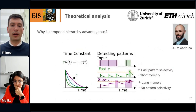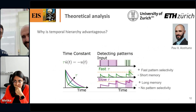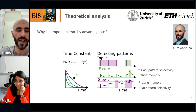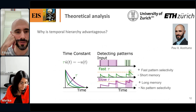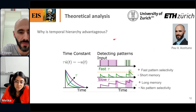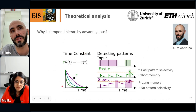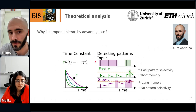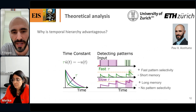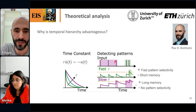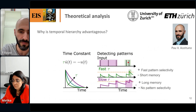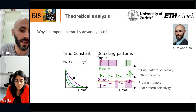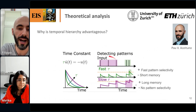Why is temporal hierarchy advantageous? Starting from the basic dynamics of a single neuron, you can think of the time constant as how much time an input takes to decay. This already changes the computations you can do. For example, consider two similar patterns: three spikes spread over time in purple, and two spikes very closely together in green. A very fast neuron with a small time constant cannot integrate those three spikes, so it doesn't recognize them as part of a single pattern.